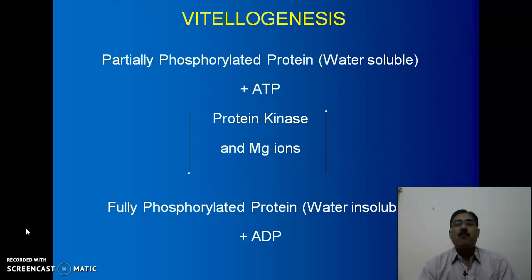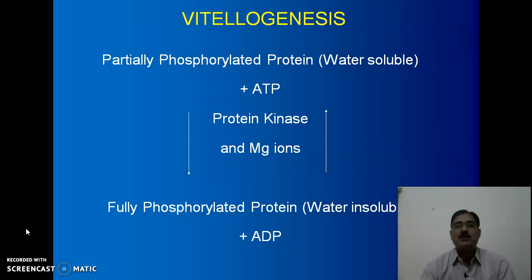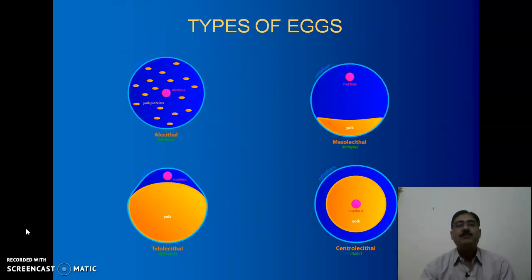In vitellogenesis, a partially phosphorylated protein that is soluble in water reacts with ATP in the presence of the enzyme protein kinase and magnesium ions acting as cofactor, to form a fully phosphorylated protein that is insoluble in water, plus ADP.